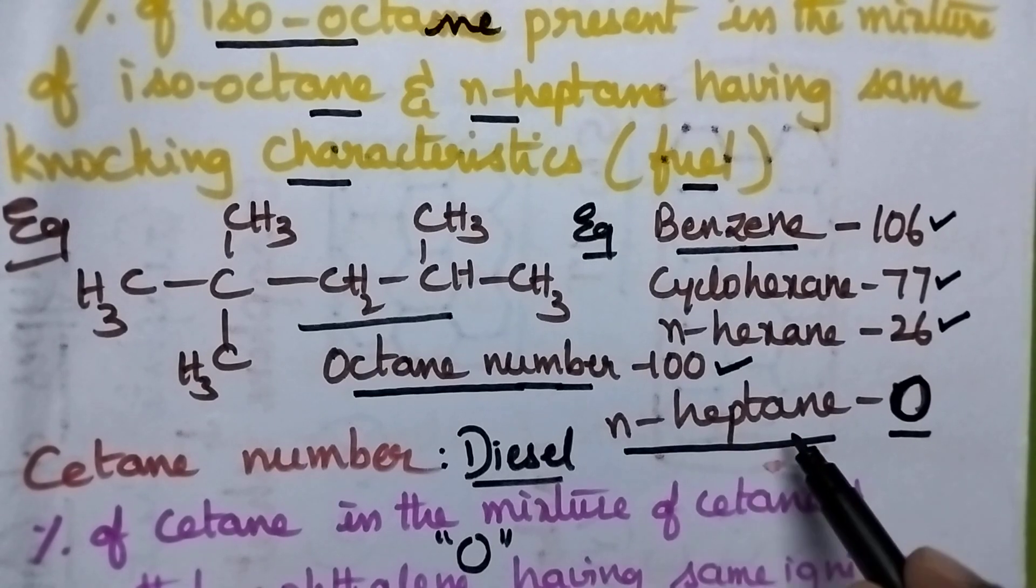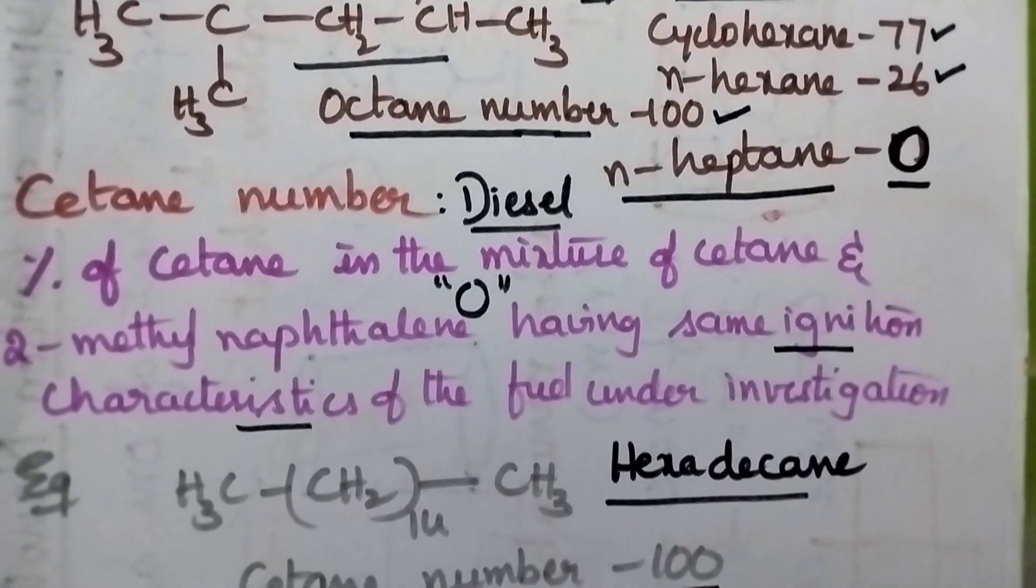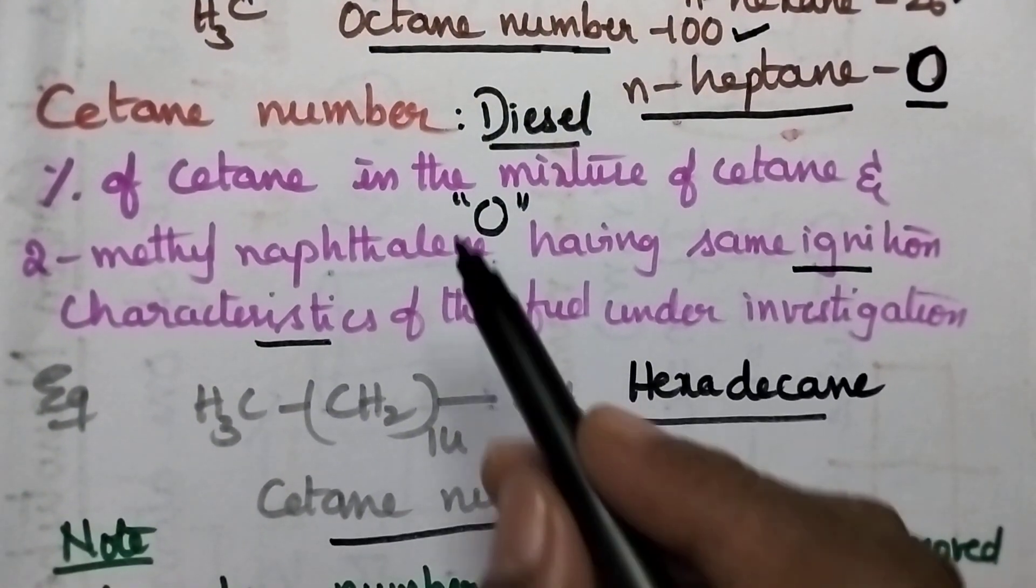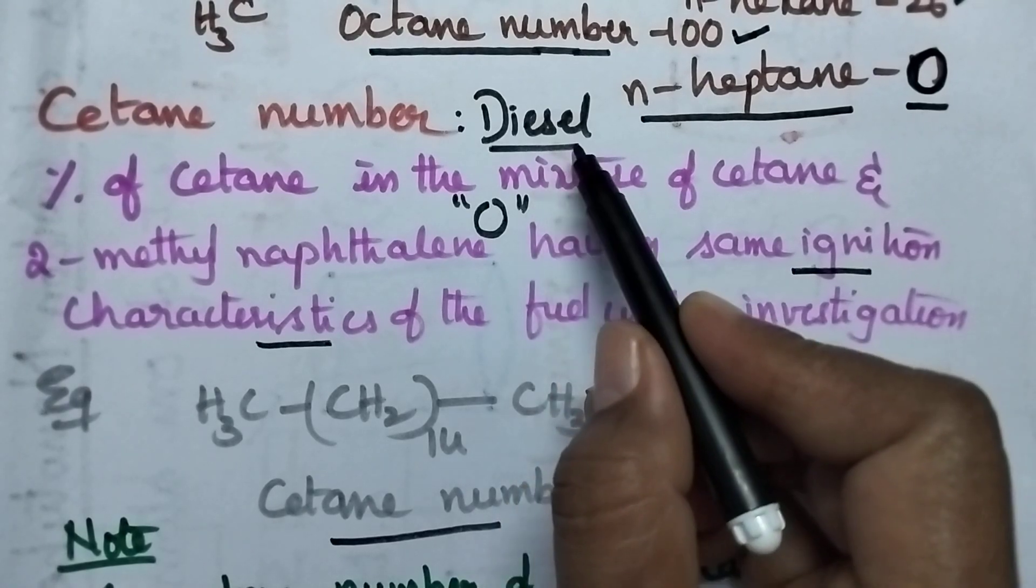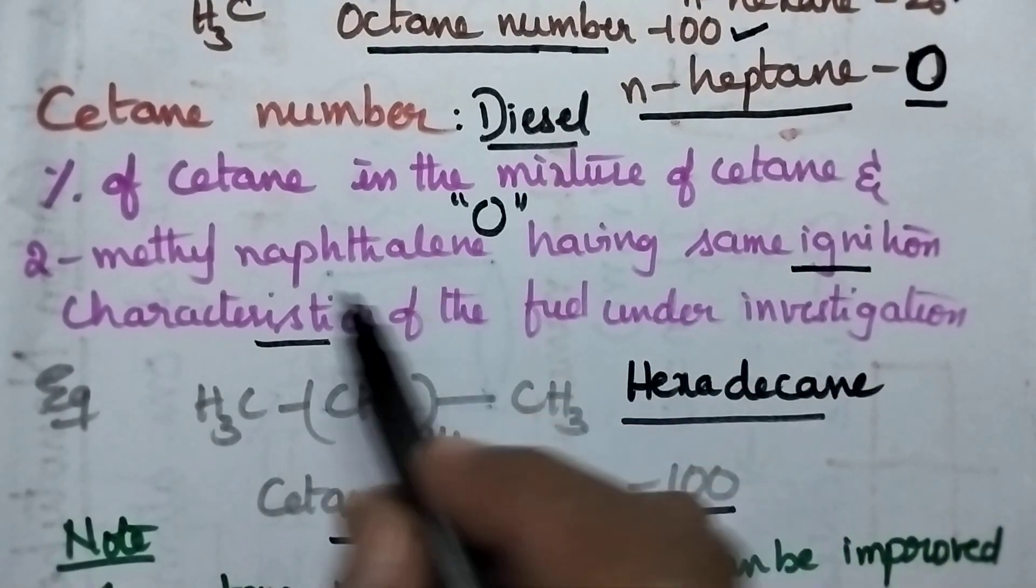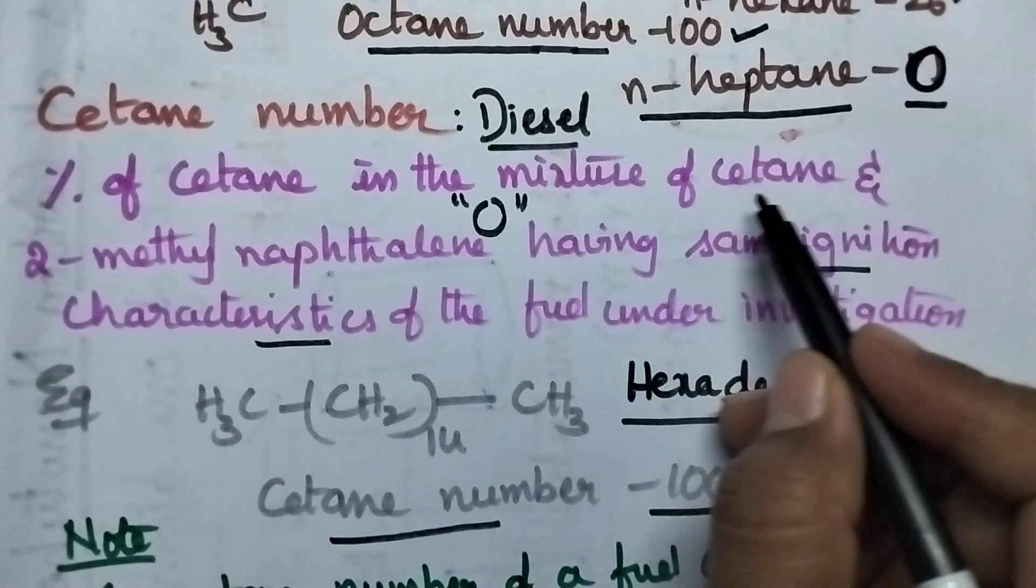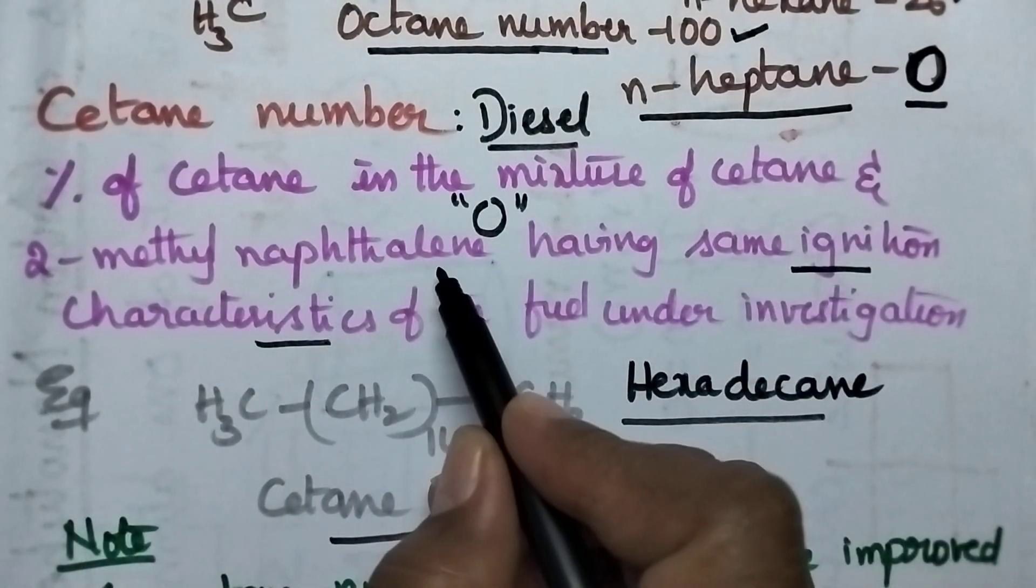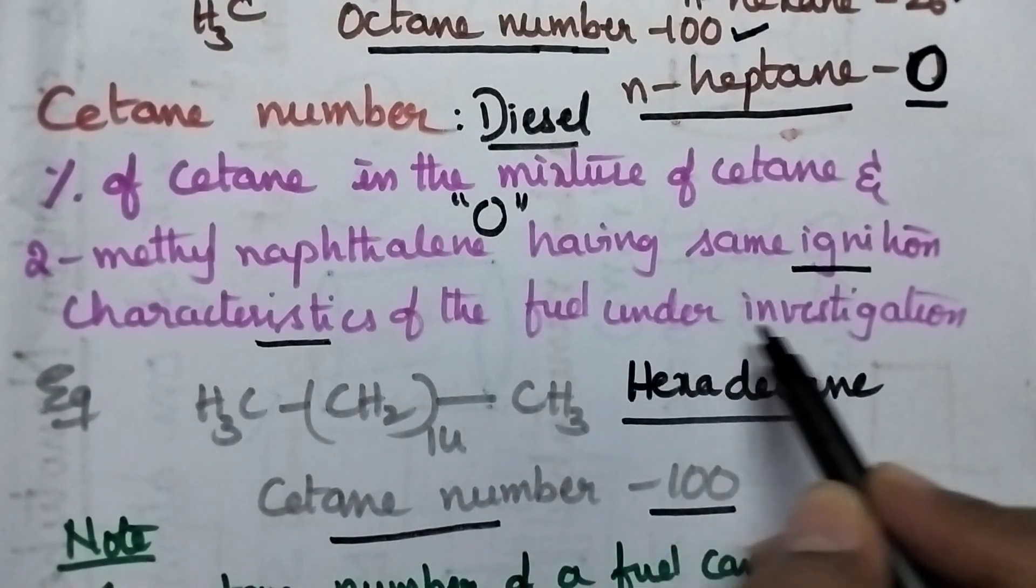Let us move on to the cetane number. Cetane number is highly useful to measure the efficiency of diesel and it can be defined as the percentage of cetane present in the mixture of cetane and 2-methyl-naphthalene showing the same ignition characteristics of the fuel under investigation.